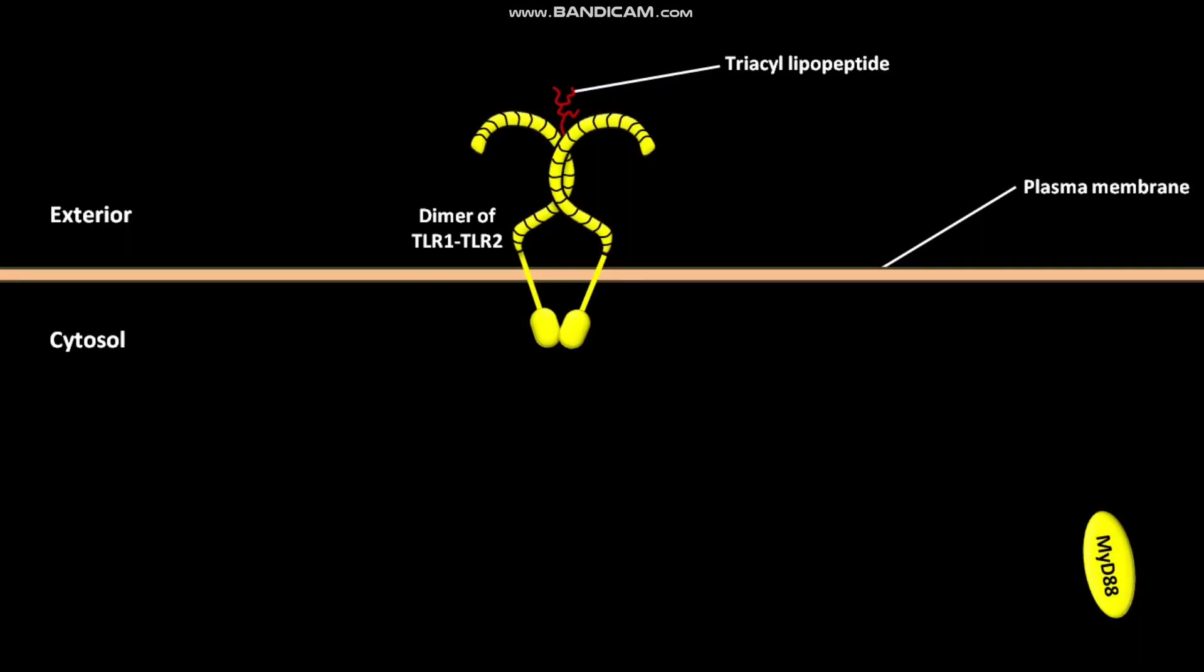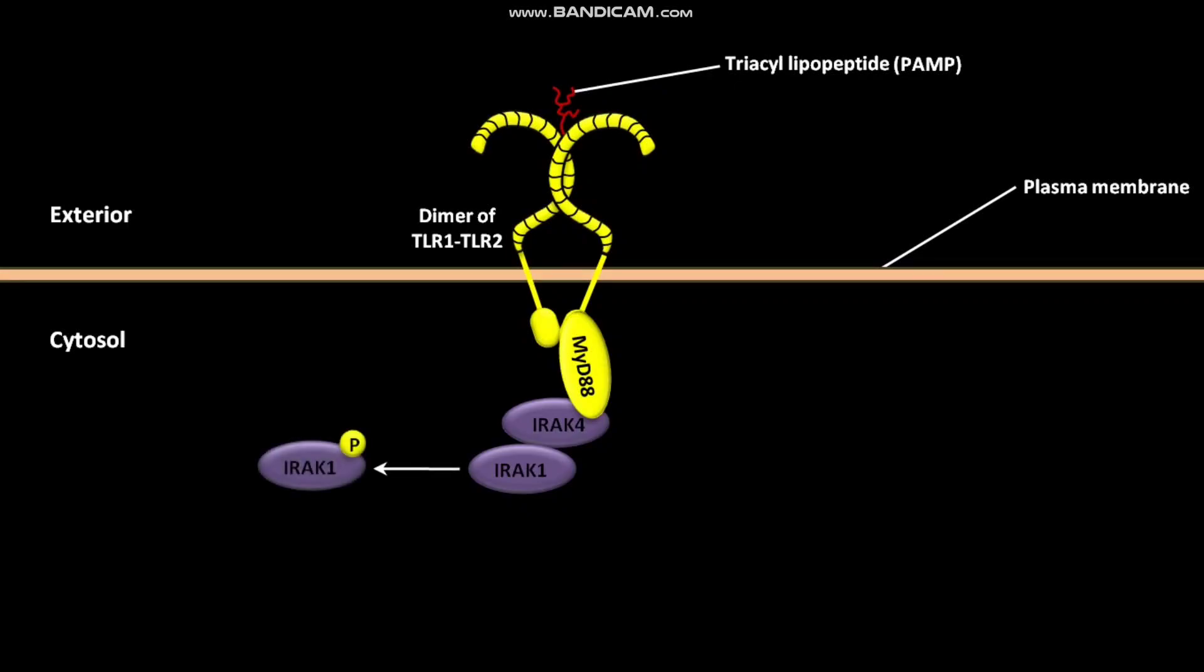Triacyl lipopeptide is a PAMP. The cytosolic adapter protein MYD88 then associates with TIR domains of TLR1 and TLR2. After this association, MYD88 recruits IRAK4 and IRAK1. IRAK1 then phosphorylates itself.